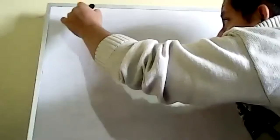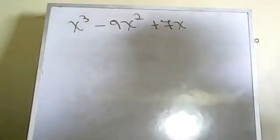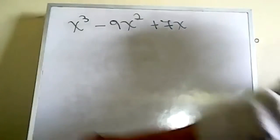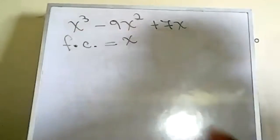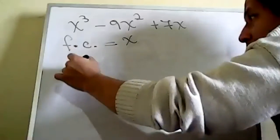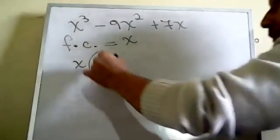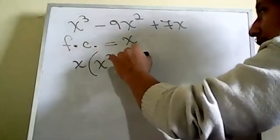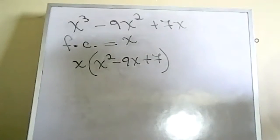Último ejercicio para ustedes: x³ - 9x² + 7x. ¿Cuál sería el factor común? Solamente x. Entonces: x(x² - 9x + 7).